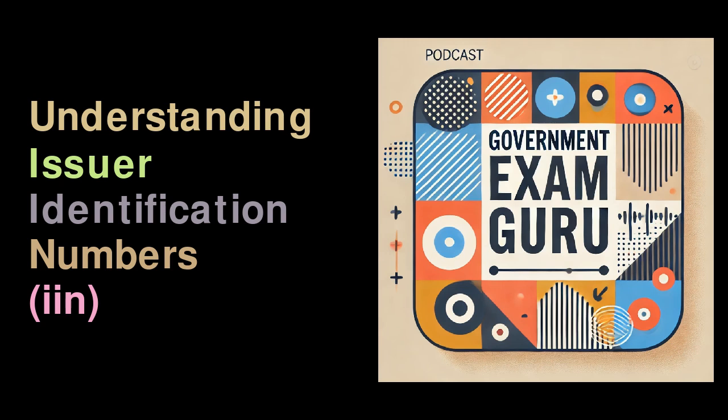Key Features. Location: the IIN is located at the beginning of the payment card number, typically made up of the first six or eight digits. Authentication: following the IIN are additional digits that pertain specifically to the cardholder, culminating in a final check digit used for verifying the authenticity of the entire card number. Length: the entire card number can range from 15 to 19 digits, and the IIN itself generally consists of six to eight digits, a standard established by the International Organization for Standardization, ISO.